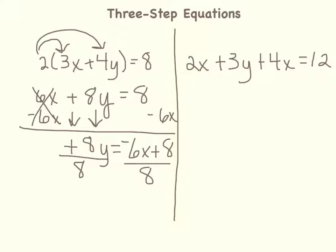8 divided by 8 is 1, so it cancels out. Negative 6 divided by 8 is negative 3 fourths times x. And then positive 8 divided by positive 8 is positive 1. So I'm going to put plus 1, and that's our solution.